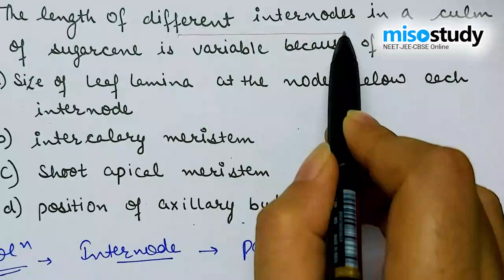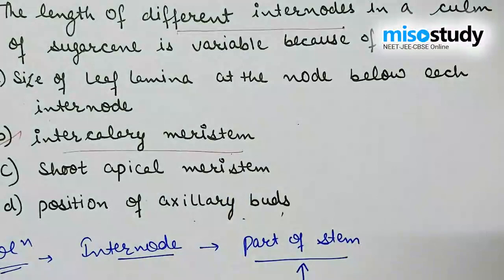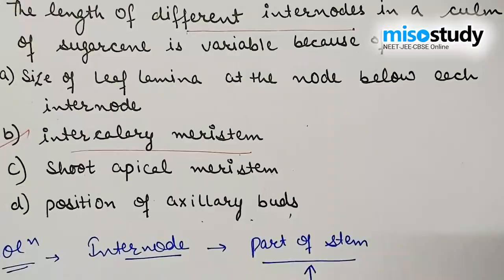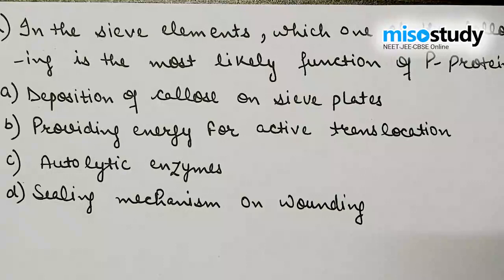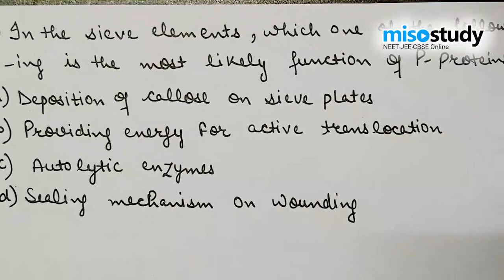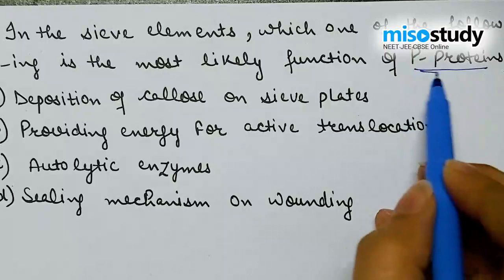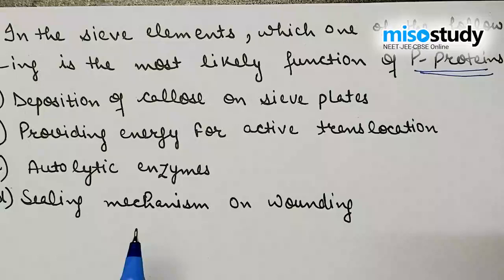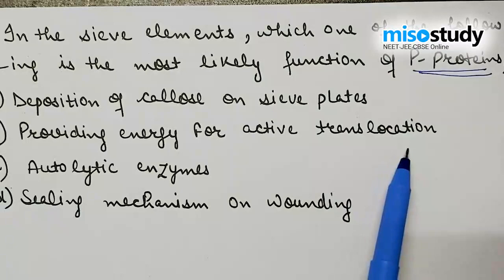Option B, intercalary meristem, is the right answer in this case. Let's move on to the next question. In the sieve elements, which one of the following is the most likely function of P-protein? Options: A — induces deposition of callose on sieve plates; B — providing energy for active translocation; C — autolytic enzymes; D — sealing mechanism on wound.